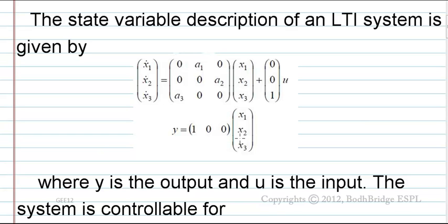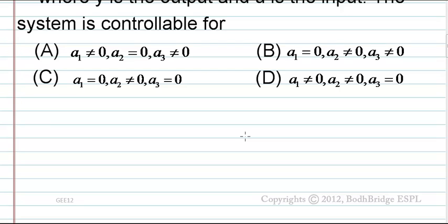The system is controllable for which condition? Options: (a) a1 ≠ 0, a2 = 0, a3 ≠ 0; (b) a1 = 0, a2 ≠ 0, a3 ≠ 0; (c) a1 = 0, a2 ≠ 0, a3 = 0; (d) a1 ≠ 0, a2 ≠ 0, a3 = 0.